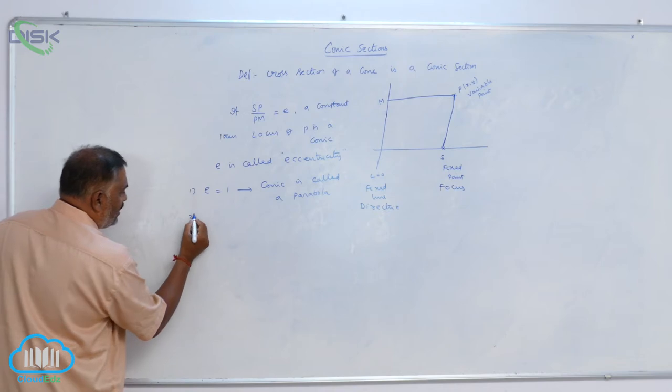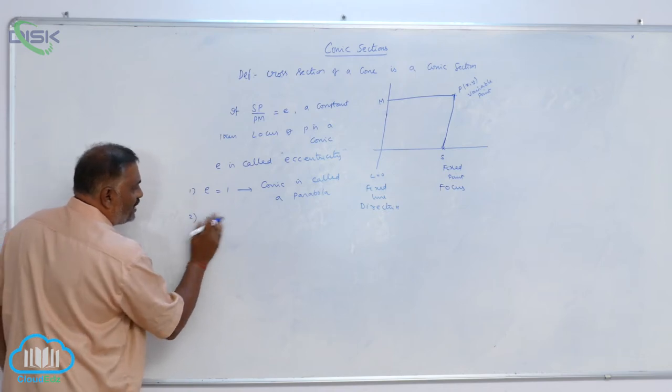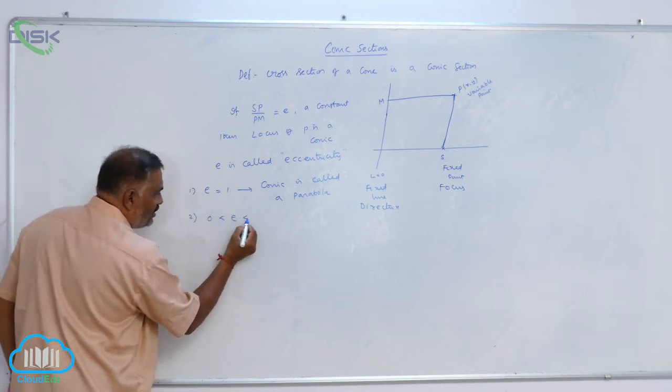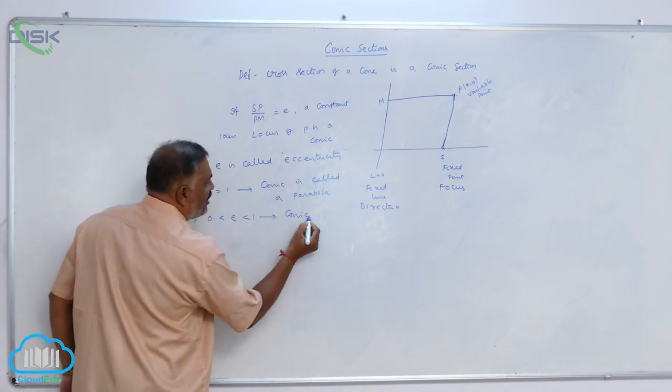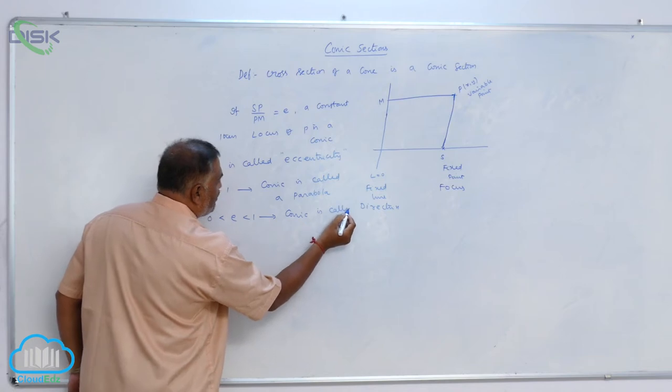Second one, E lies between 0 and 1. That means, E less than 1. Then, conic is called an ellipse.